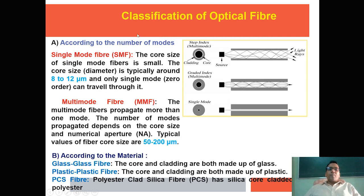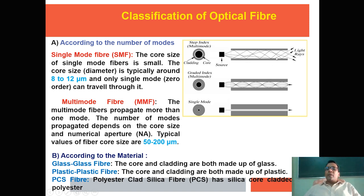Now, for the classification of optical fiber: first, according to the number of modes — the number of modes is defined as the number of paths followed by light inside the core. In single mode fiber (SMF), the core size is in the range of 8 to 12 micrometers and light follows one single straight path. In multi-mode optical fiber, the core diameter is in the range of 50 to 200 micrometers and light follows multiple paths via total internal reflection.